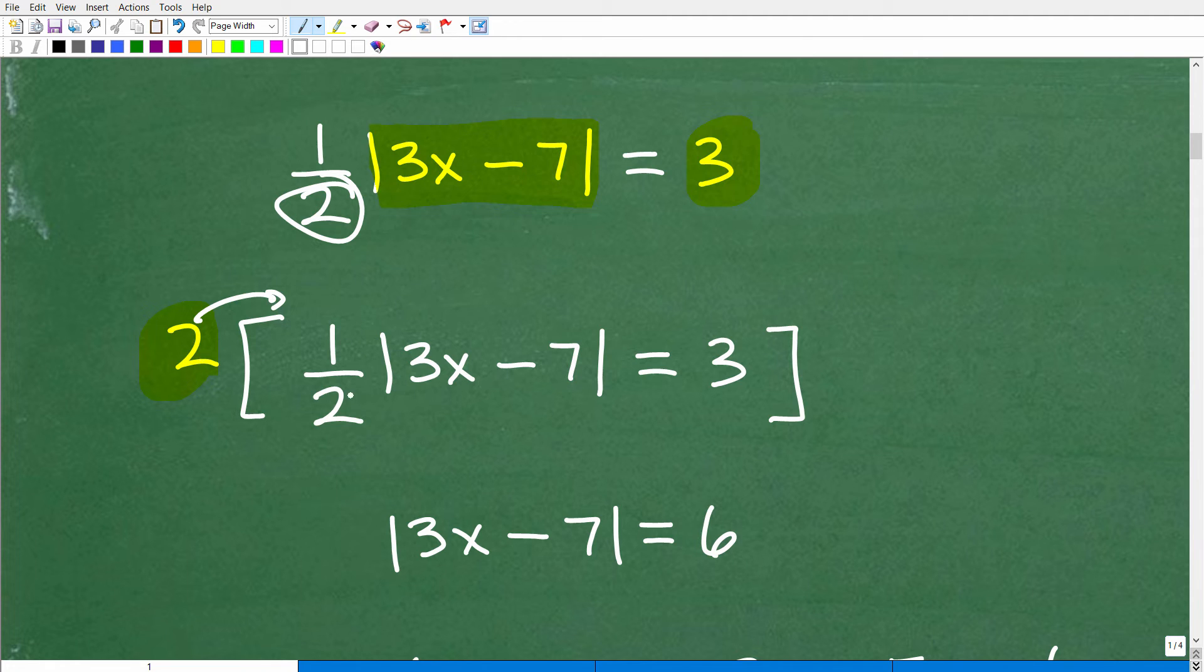Okay, so 1 times the absolute value of 3x minus 7. Well, you don't really write that 1. It's just simply going to be the absolute value of 3x minus 7 when I'm done. So 2 times one-half is 1. I don't need to write the 1. It's just implied that it's there.